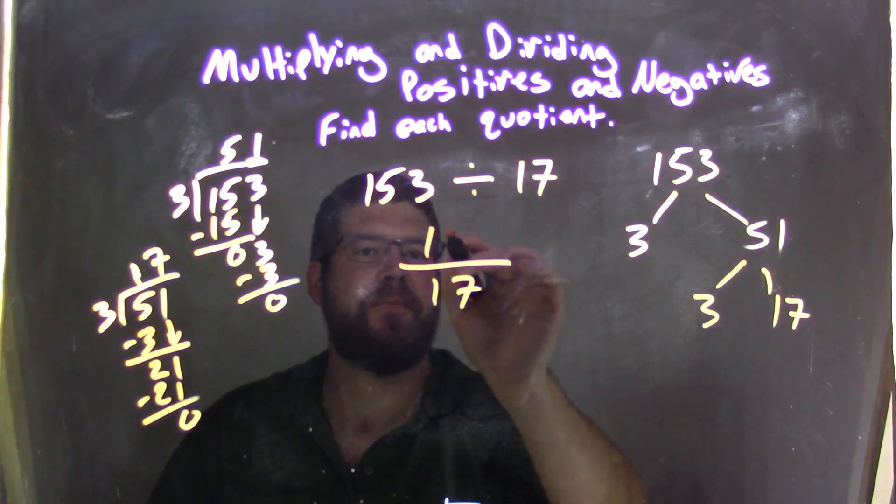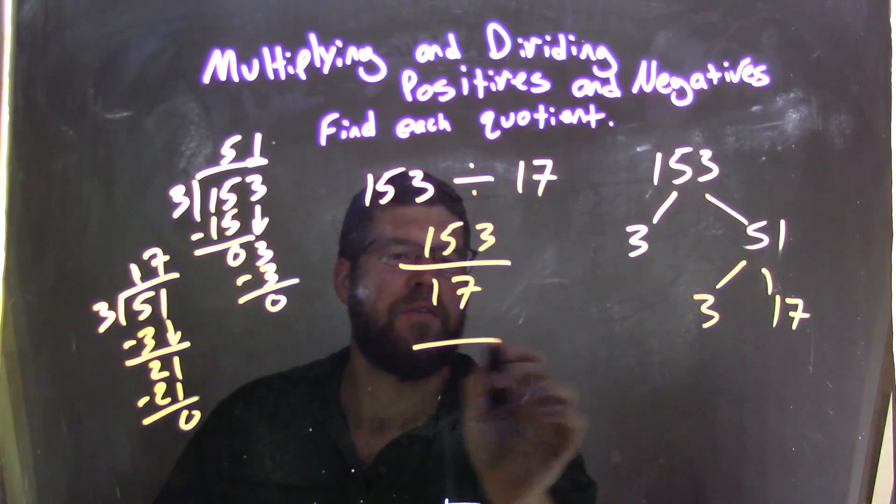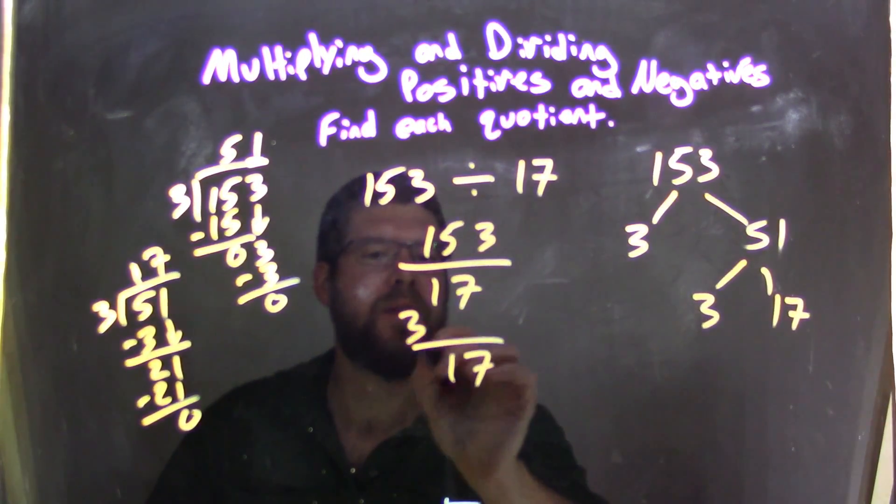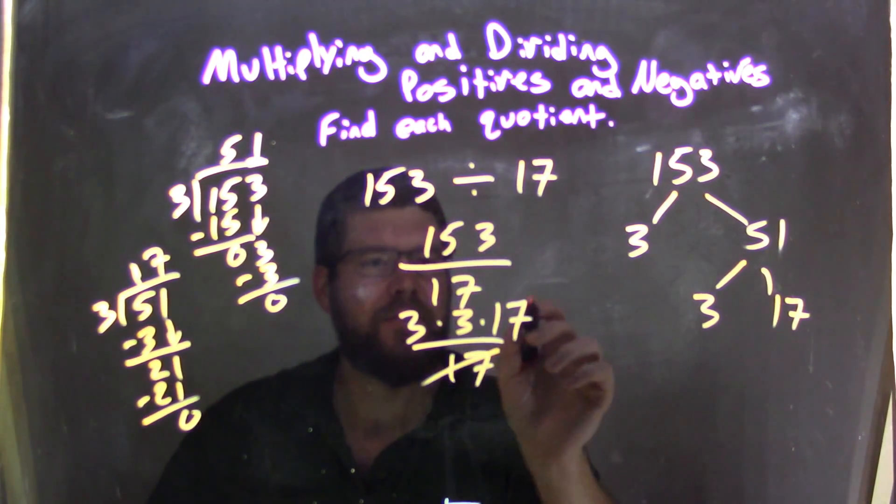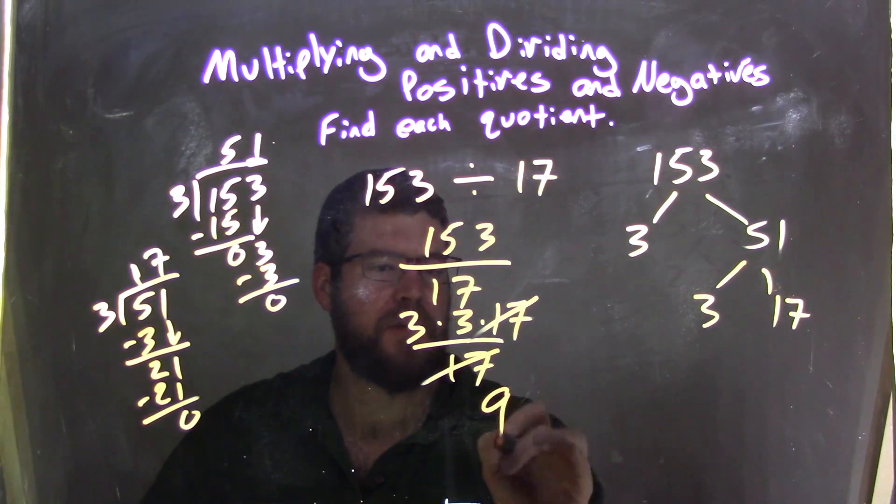153 divided by 17, like this, right? So 17 in the denominator. The numerator, 153, is 3 times 3 times 17. Well, the 17s cancel, and now we're left with 3 times 3, which is just 9. And our final answer is 9.